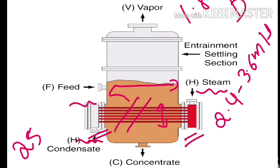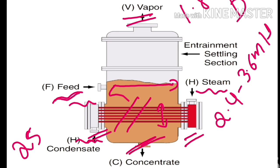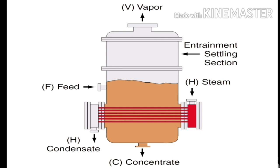The feed inlet is present above the steam compartment, and the vapor outlet is present at the top of the dome. The concentrated liquid can be collected at the bottom. These are the important parts present in the horizontal tube evaporator.